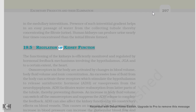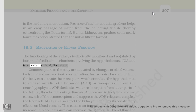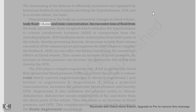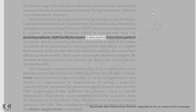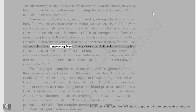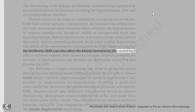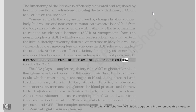The functioning of the kidneys is efficiently monitored and regulated by hormonal feedback mechanisms involving the hypothalamus, JGA, and to a certain extent, the heart. Osmoreceptors in the body are activated by changes in blood volume, body fluid volume and ionic concentration. An excessive loss of fluid from the body can activate these receptors which stimulate the hypothalamus to release antidiuretic hormone, ADH, or vasopressin from the neurohypophysis. ADH facilitates water reabsorption from latter parts of the tubule, thereby preventing diuresis. An increase in body fluid volume can switch off the osmoreceptors and suppress the ADH release to complete the feedback. ADH can also affect kidney function by its constrictory effects on blood vessels, causing an increase in blood pressure, which can increase the glomerular blood flow and thereby the GFR.